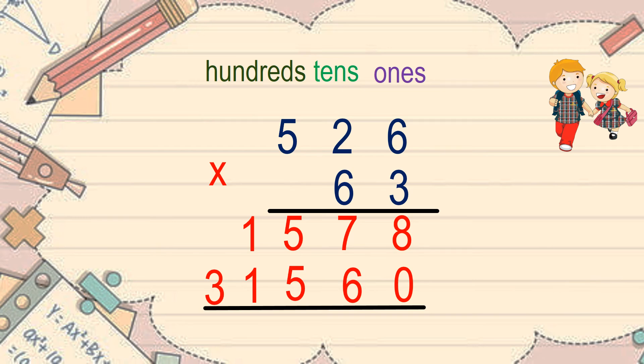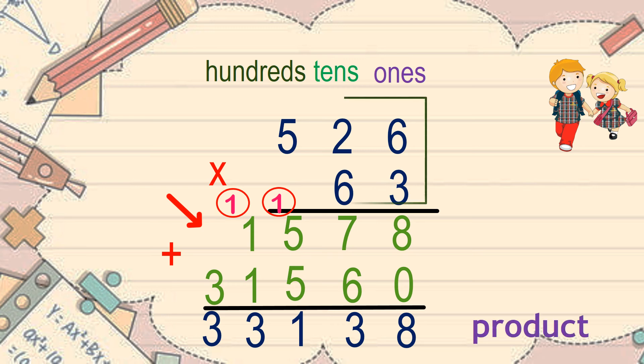Lastly, let's add the numbers. Start with 8 and 0, which is 8. 7 and 6, we get 13. So we keep 3 and carry over 1. 5 and 5 equals 10. Added by 1, we have 11. Keep 1 and carry over the other. Now we have 1, 1 and 1. We get 3 in total. Notice that there isn't any other digit to be added to 3. So simply pull 3 down. Here it is. The product of 526 and 63 is 33,138.